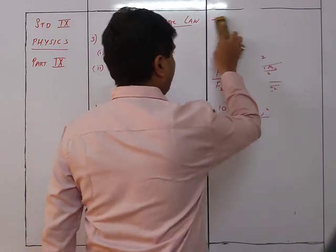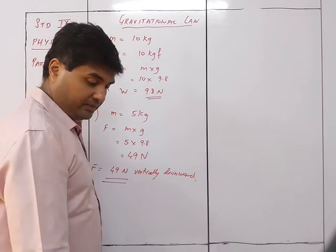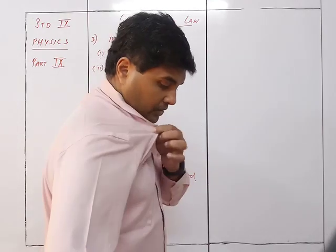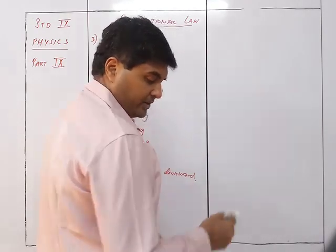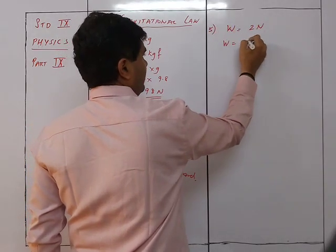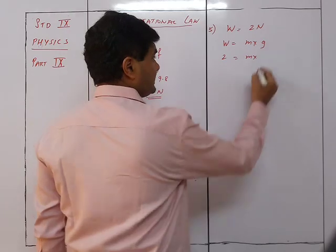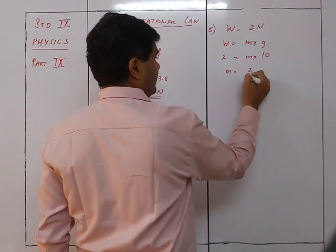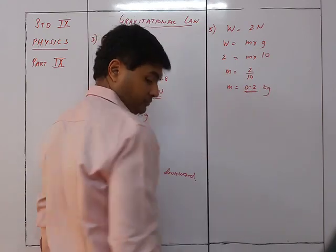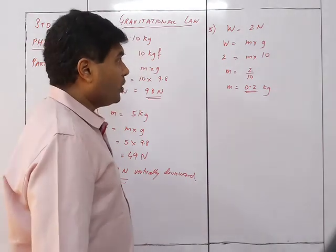Question 5: The weight of a body is 2 newton. What is the mass of the body? W = 2 N, W = m·g, so 2 = m × 10, therefore m = 2/10 = 0.2 kg.